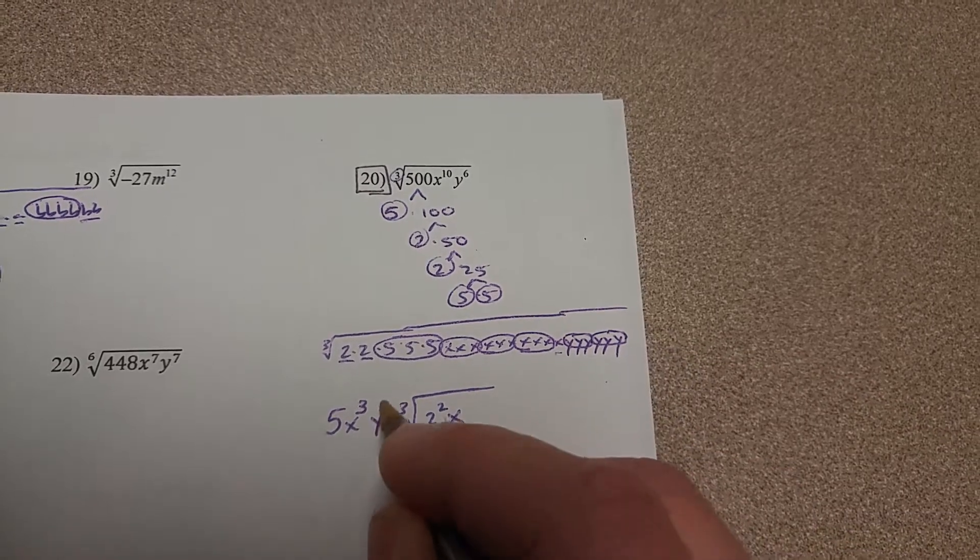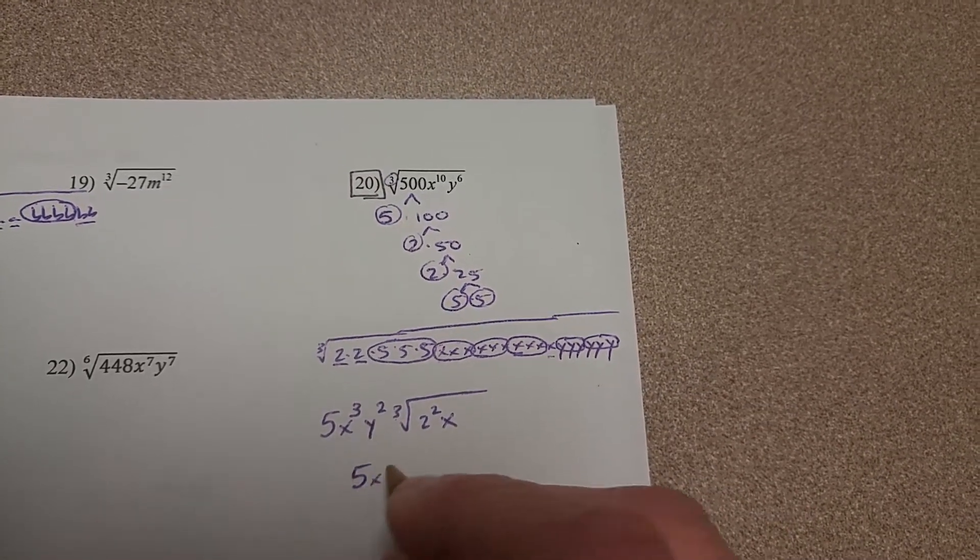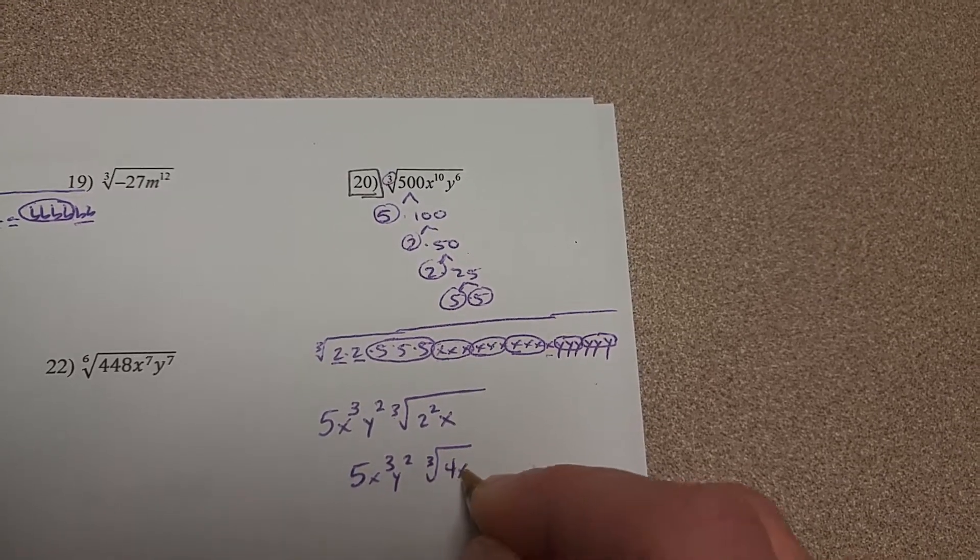And I have two groups of y's, and I don't have any y's left over, so this is going to be 5x cubed y squared cube root of 4x.